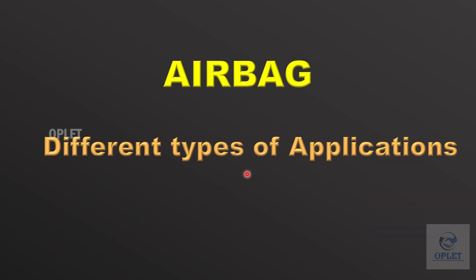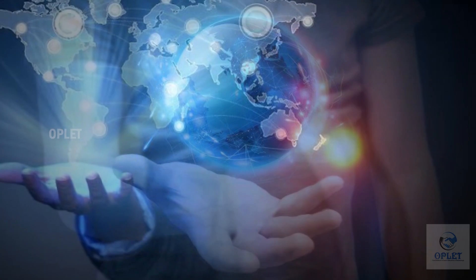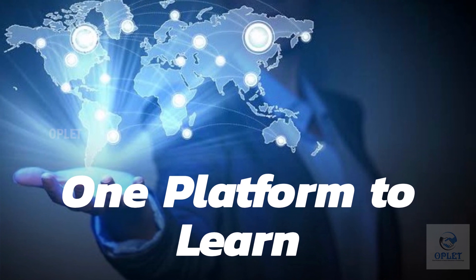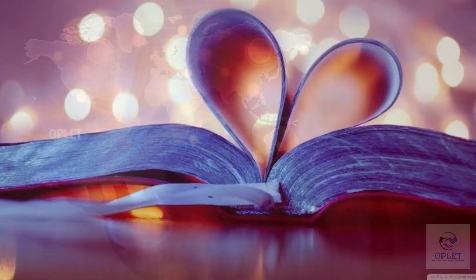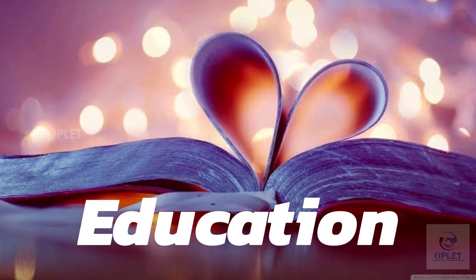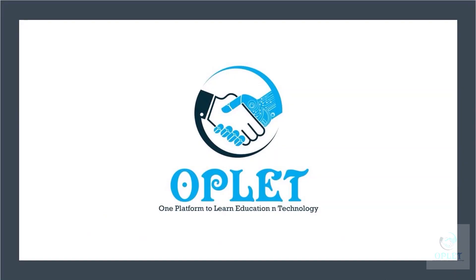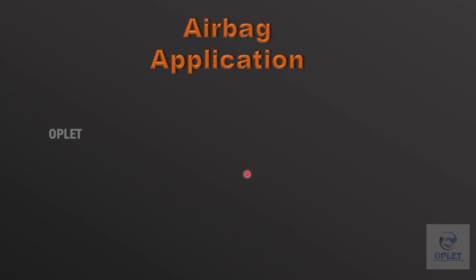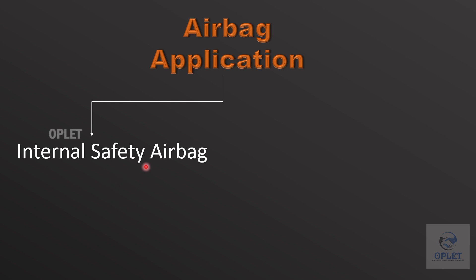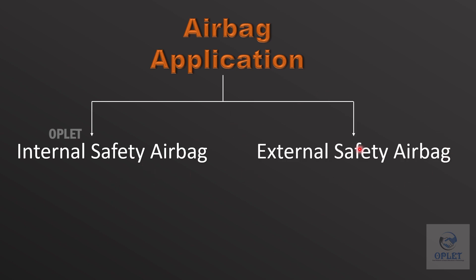In this video we will explore different types of airbags and their positions in the vehicle. We will discuss airbag types in two stages: internal safety airbags for internal safety, and external safety airbags for external safety usage.